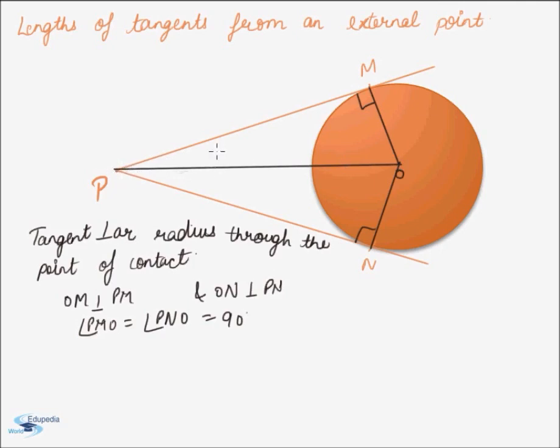On joining P with O, we have two right triangles, PMO and PNO.